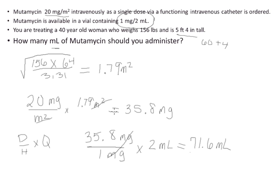So to recap, our first step in this problem was to find the body surface area for the patient. Our second step in this problem is to multiply the order by the patient's body surface area, so that the label of meters squared canceled, and we're dealing with just a label of milligrams.